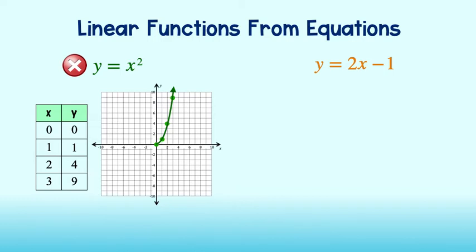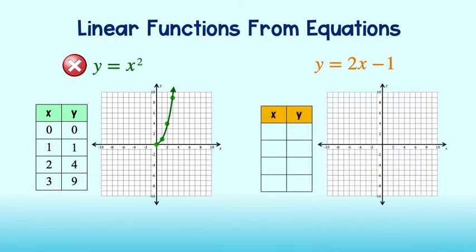Okay, how about the next one? We will choose 0, 1, 2, and 3 again for our x values. Let's figure out the y values by plugging them into our equation. 2 times 0 minus 1 equals negative 1, 2 times 1 minus 1 equals 1, 2 times 2 minus 1 is 3, and 2 times 3 minus 1 is equal to 5.